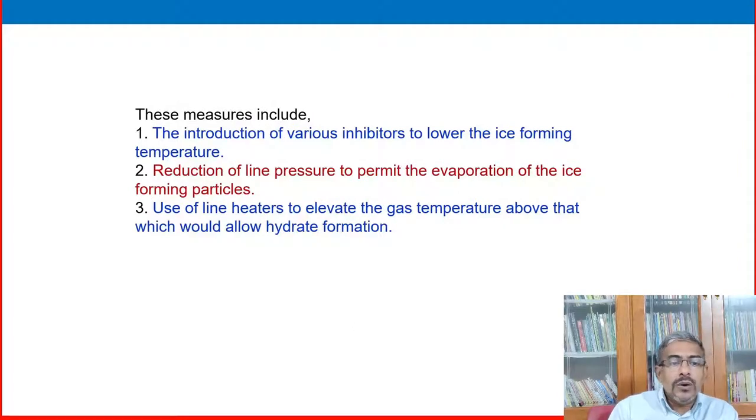Such conditions may be the temperature and pressure of the gas in the formation and the amount of free water produced within the gas. It is necessary to reduce and control the water content in the gas by appropriate measures in the field. These measures include: introduction of various inhibitors to lower the ice forming temperature, reduction of line pressure to permit evaporation of ice forming particles, and use of line heaters to elevate gas temperature above that which would allow hydrate formation. These are the common methods to minimize hydrate formation inside the pipeline.